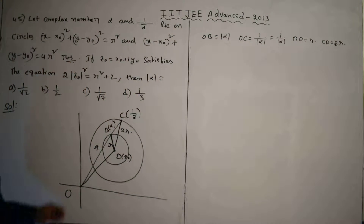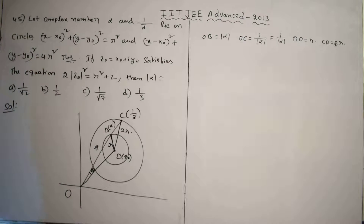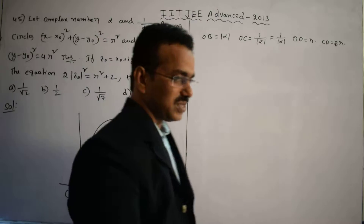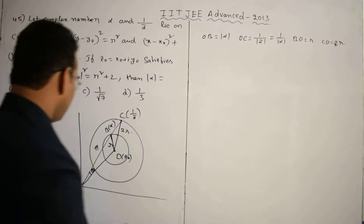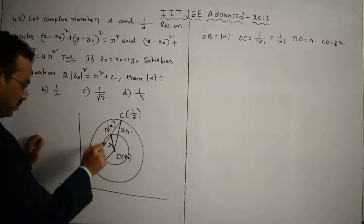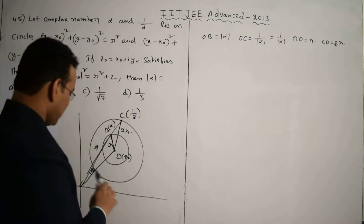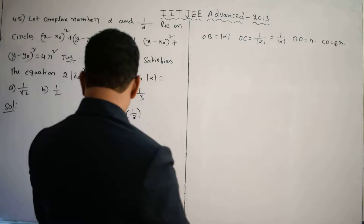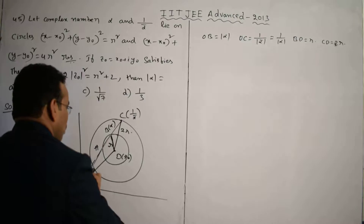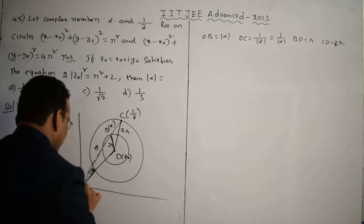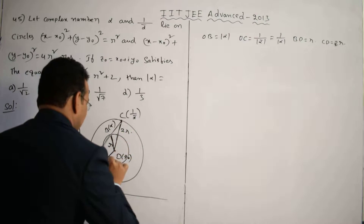From the diagram, there is an angle θ. There is a logic involved in this question. Observing the diagram, there are two triangles: triangle OBD and triangle OCD. The angle θ is the same in both triangles.